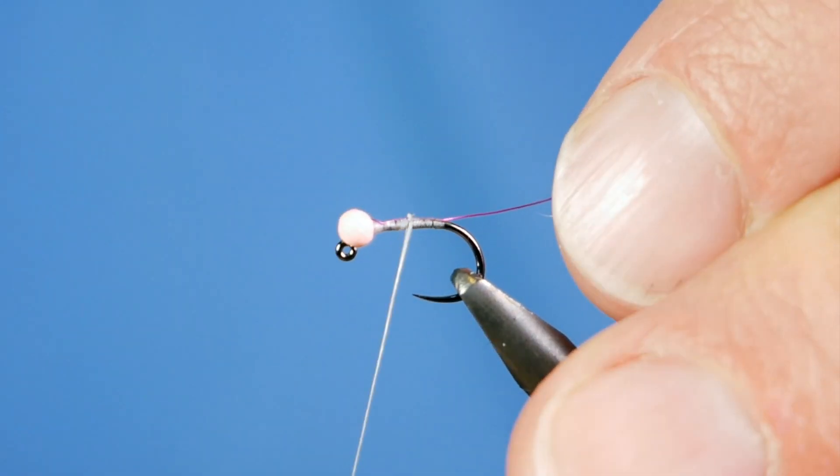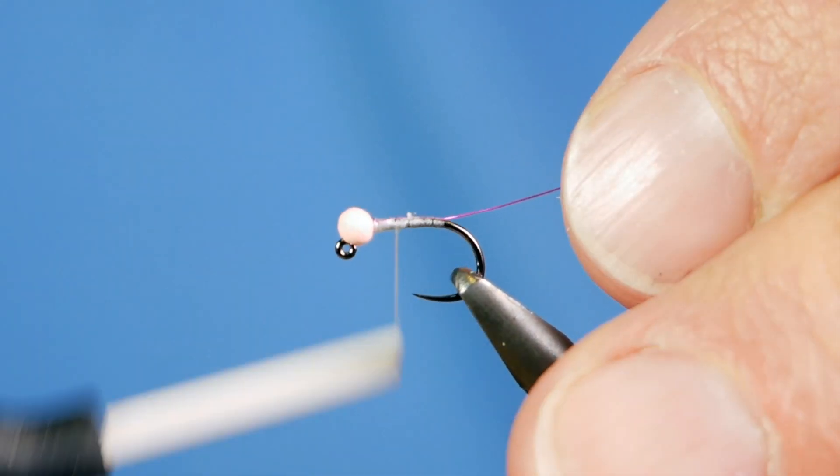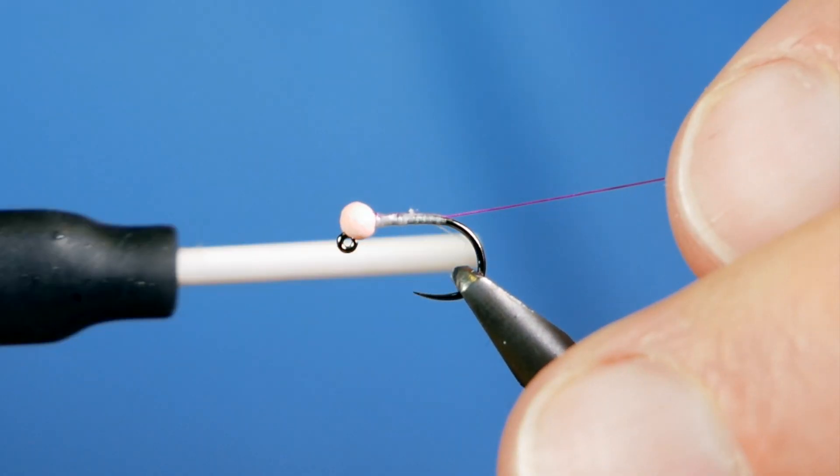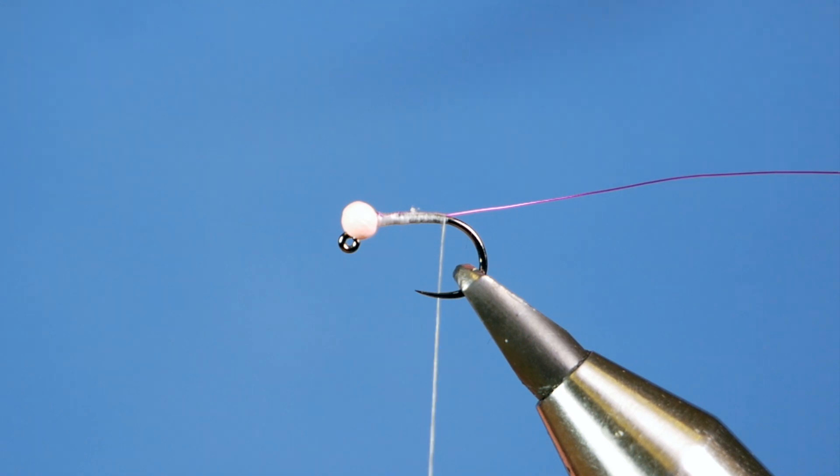And then what I'm going to do is bring my thread all the way up to create the tiniest of tapers. In a size 18 hook, will it make any difference? More than likely not. But I like to do it anyway.